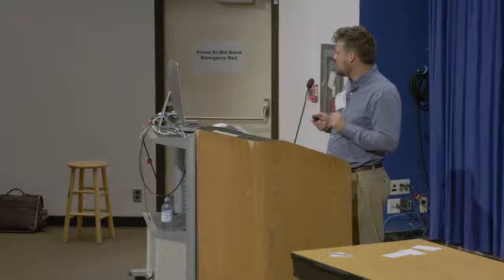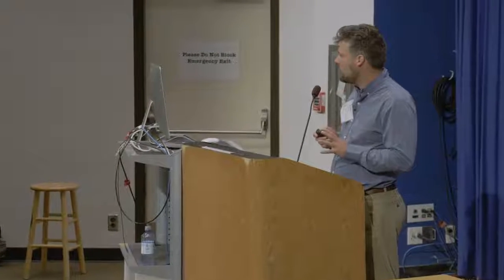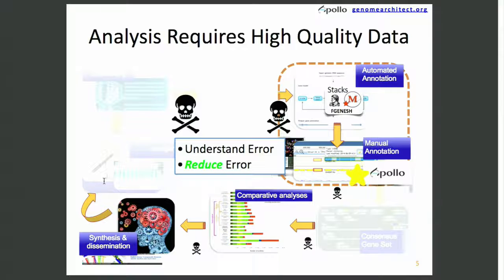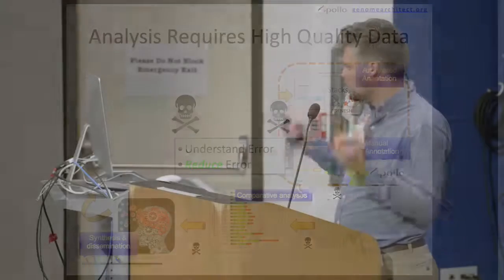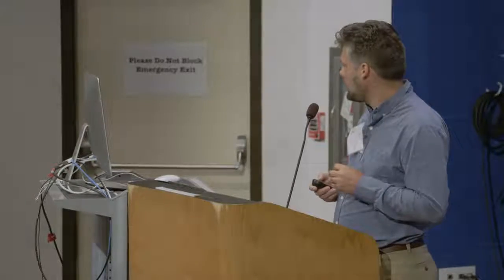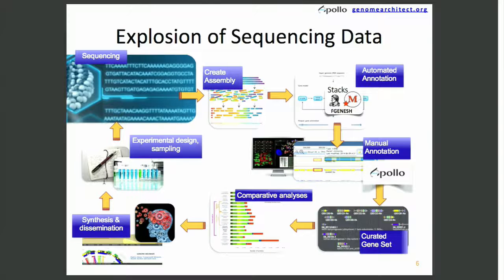Doing that analysis and dissemination requires high quality data. The one thing you don't want to end up doing is sharing errors that you get from your annotation, which go out and people are analyzing data with errors in it and doing synthesizing and whatnot. The point of using Apollo is not only being able to understand and view the error, but reduce it before it actually gets out the door. The manual annotation step should be a final step before that happens. And with an explosion of yet more sequencing data every year, this problem is going to get worse.